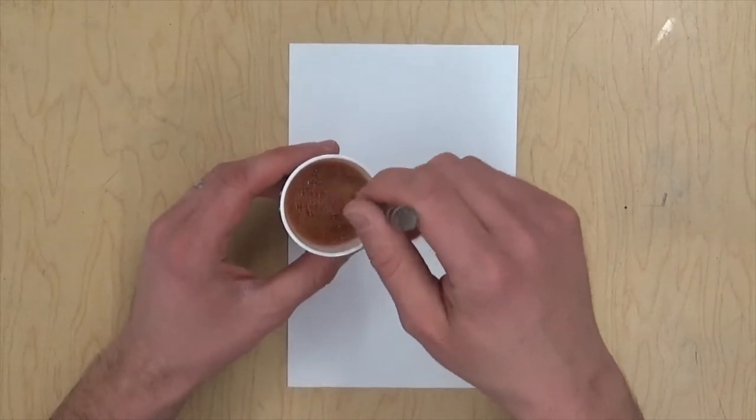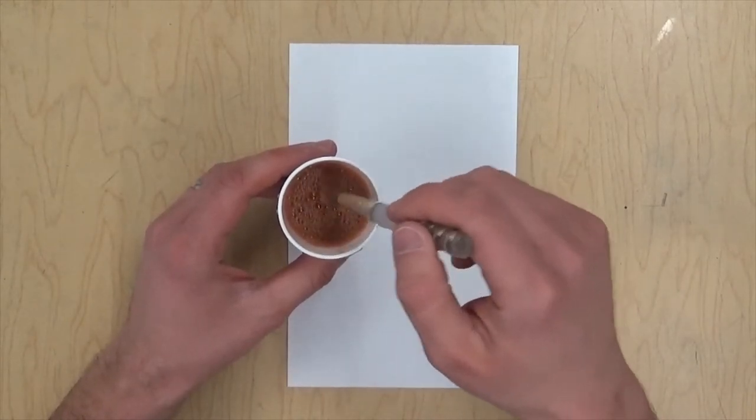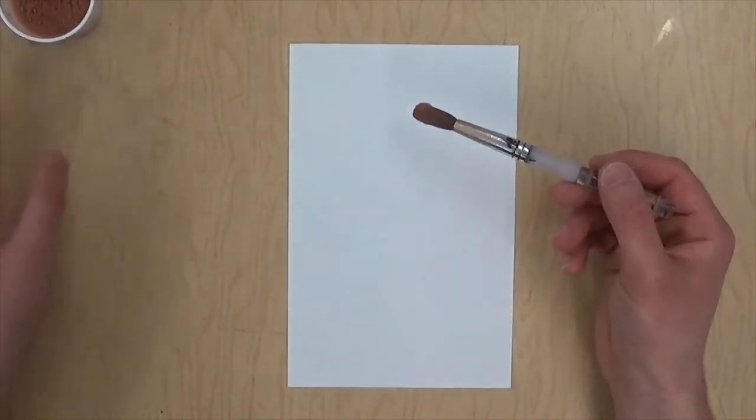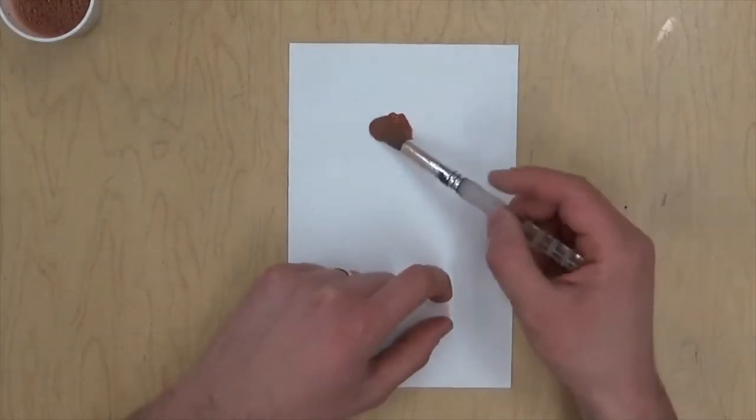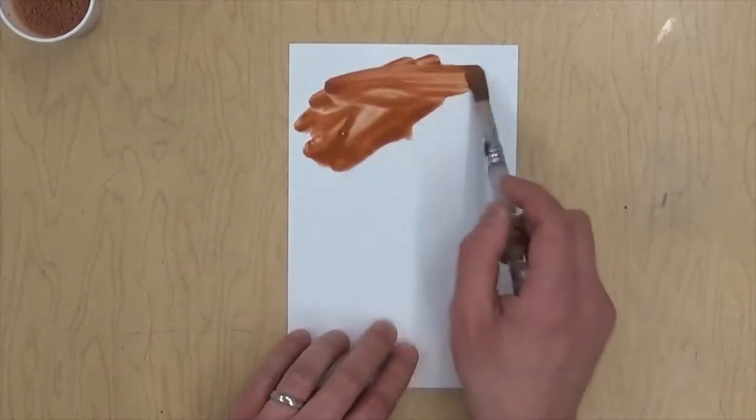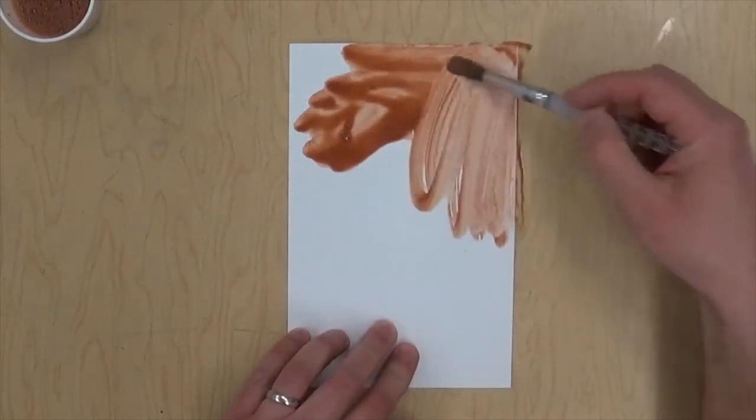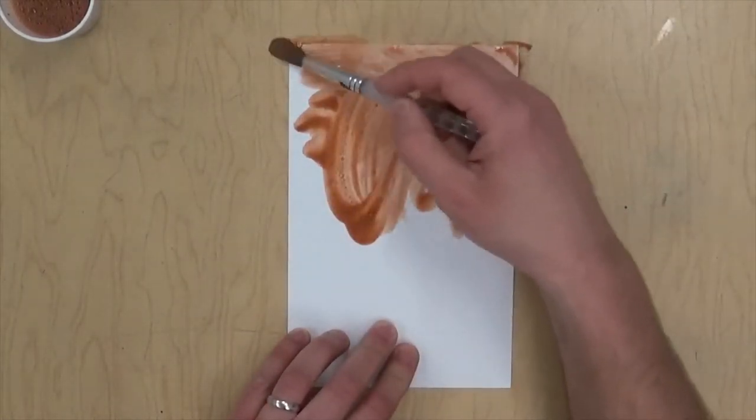Now in ancient Egypt, they would write their hieroglyphics right on walls or on stone tablets, on monuments and things like that. In fact, a lot of the monuments in the United States of America that we have are kind of based on ancient Egyptian monuments. But I'm just going to stain my paper just to make it look old.